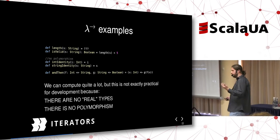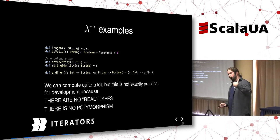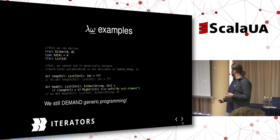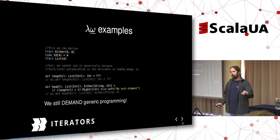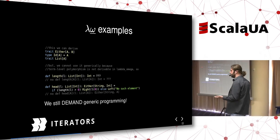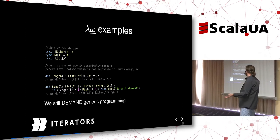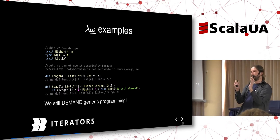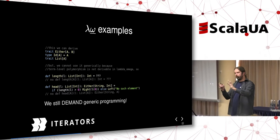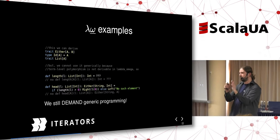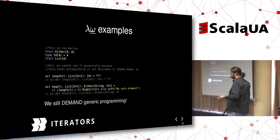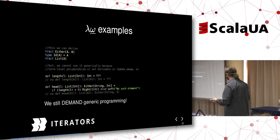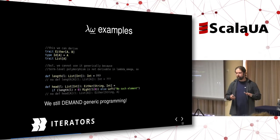Moving to the back of the cube, we obtain a strange system called lambda omega. This type system enables term to depend on term and type to depend on type, so you can form elaborate, very complicated types like Either, ID type, lists, and so on. But because terms and types cannot mix — only type-on-type and term-on-term dependencies are allowed — even though I can have a list of anything, I cannot write a function that computes the length of a list of any type. That's a really strange, not practical type system.